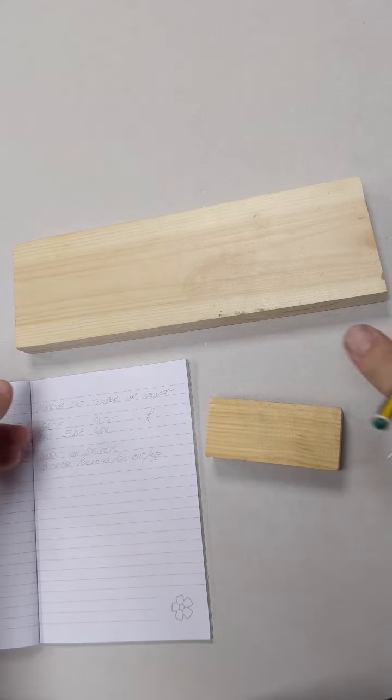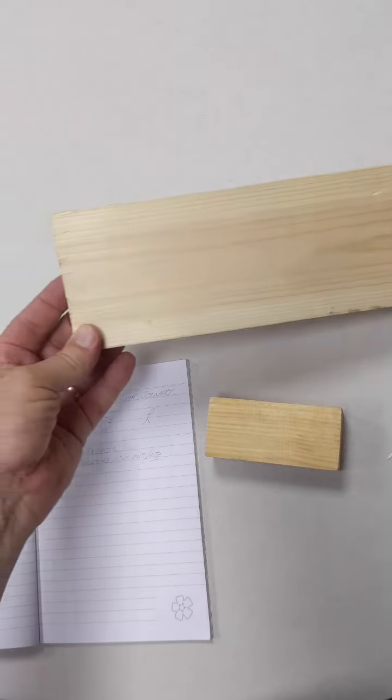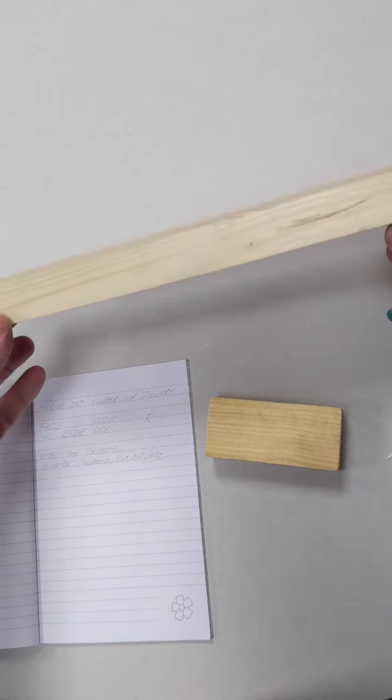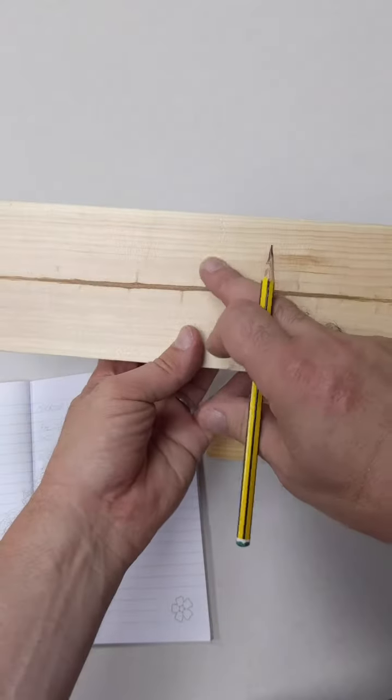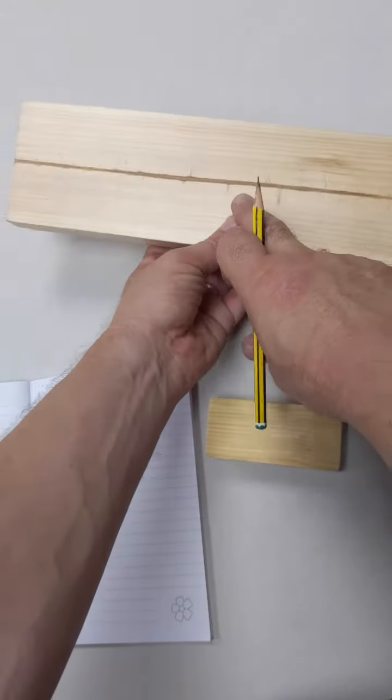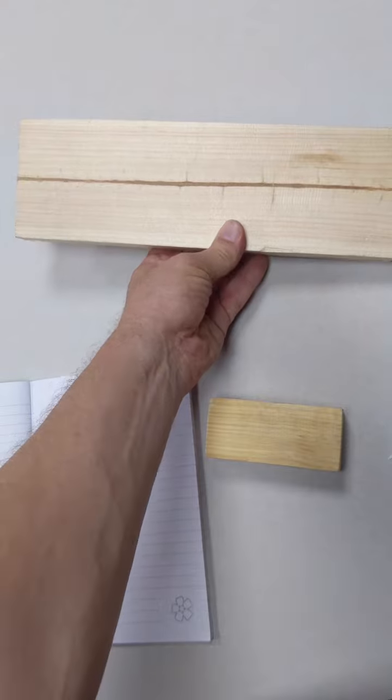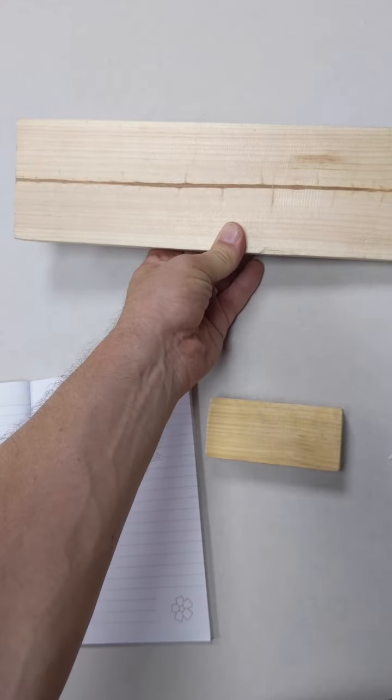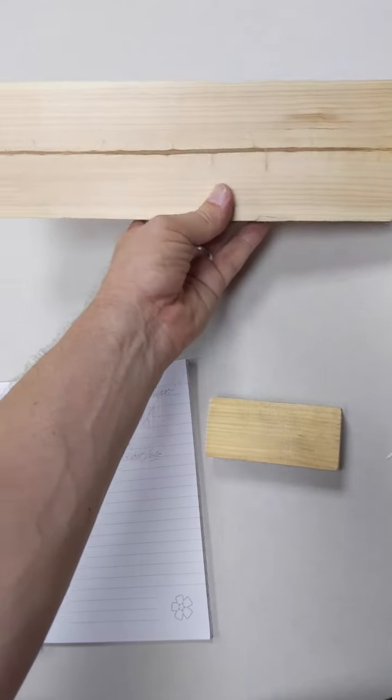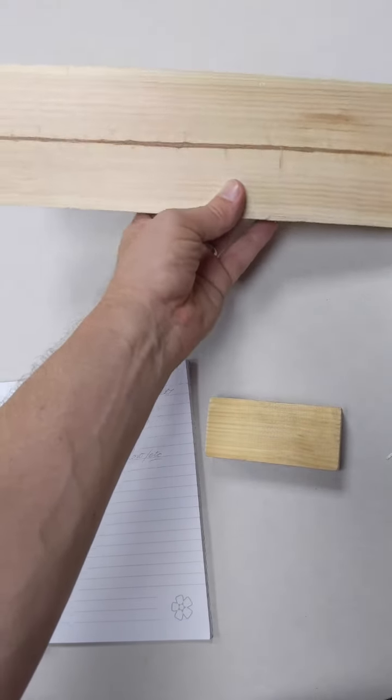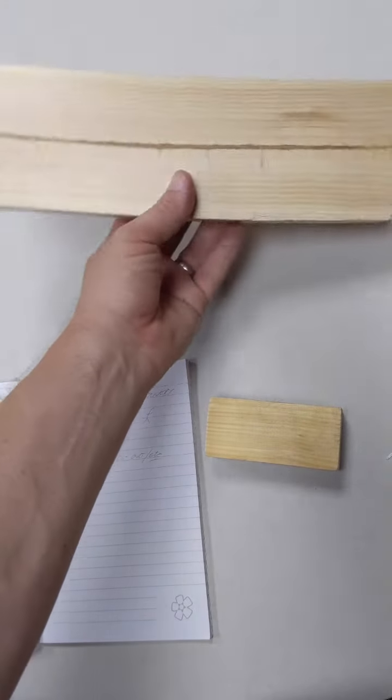When you have your timber you want to take a look at it and check it out for defects. If we didn't want this line showing we would hide that side. If we did want that to be our main piece you could have that on a drawer front, could look good. In this instance we're going to avoid it.